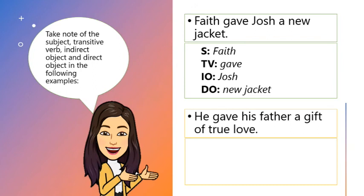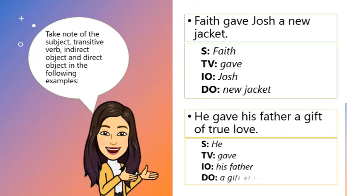Next example: He gave his father a gift of true love. What do you think is the subject here? He is the subject. Gave is the transitive verb. The indirect object is his father, and the direct object is the gift of true love.